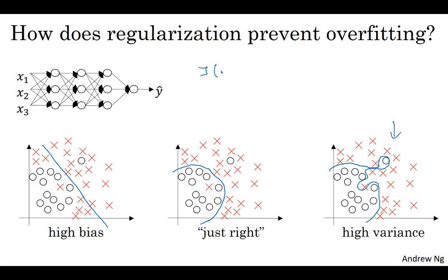So you have some cost function J of W, B equals sum of the losses. And so what we did for regularization was add this extra term that penalizes the weight matrices from being too large. And we said that was a Frobenius norm.